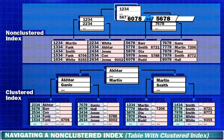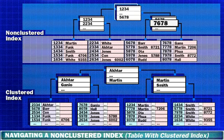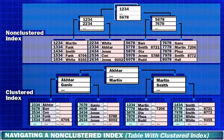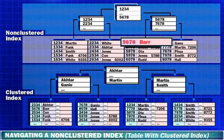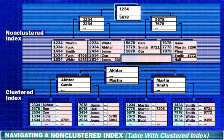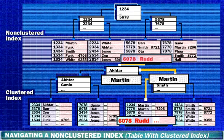SQL Server evaluates whether 6078 is greater than or equal to 5678 — true — and moves to the next key value. SQL Server evaluates whether 6078 is greater than or equal to 7678. The comparison is false. SQL Server uses the previous key value 5678 and moves to the page at the next level to which 5678 points. SQL Server reads through the leaf level pages until it finds 6078. This key value maps to the clustering key value Rudd. SQL Server uses this value to navigate through the clustered index from the root level to retrieve the row in which Rudd is the last name.